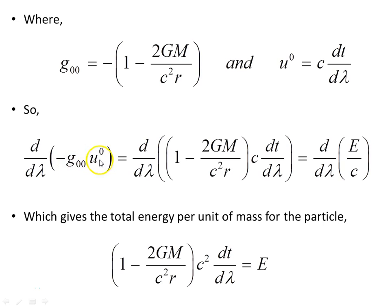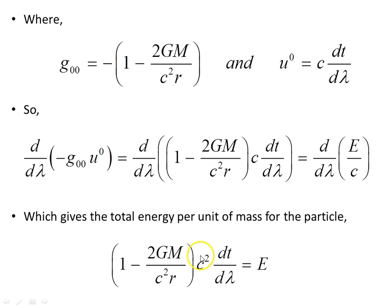So d/dλ of this object — the argument inside the derivative — equals on the right-hand side the argument E/c. This means these two arguments of these derivatives are equal, and so we get the total energy per unit mass of the particle conserved.